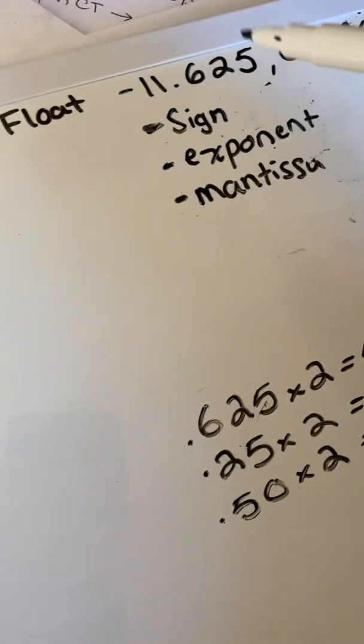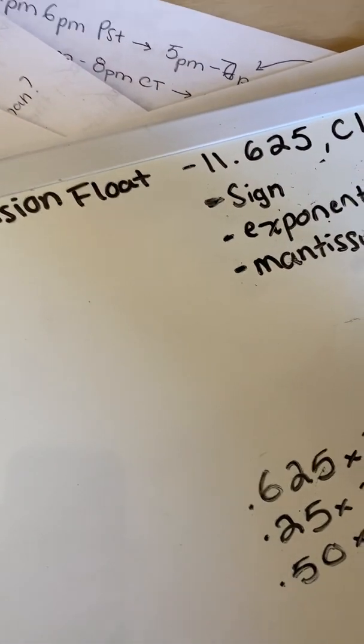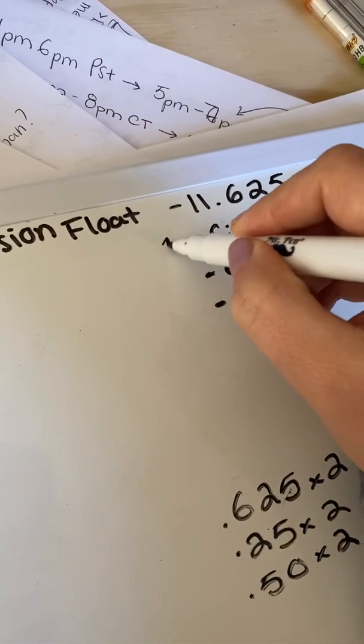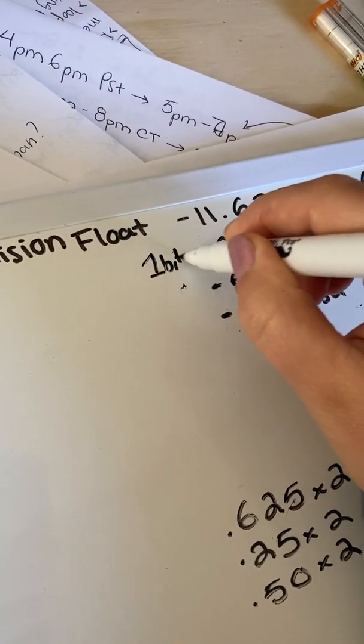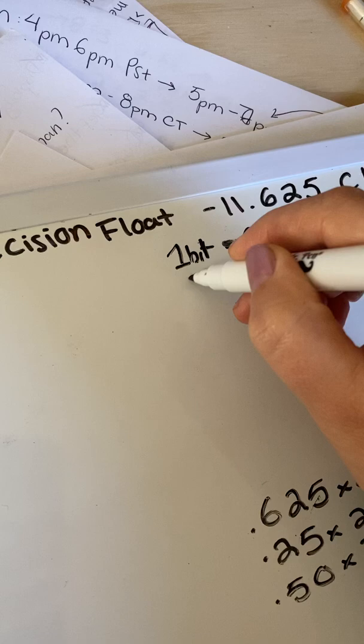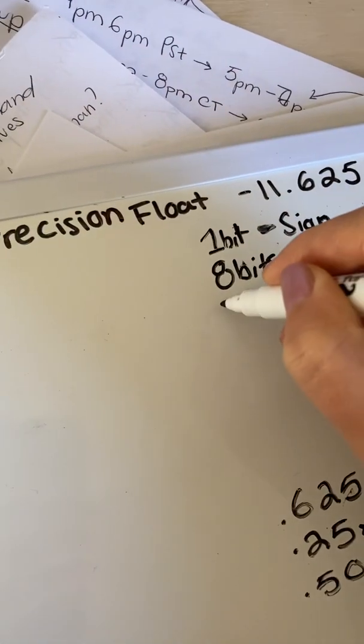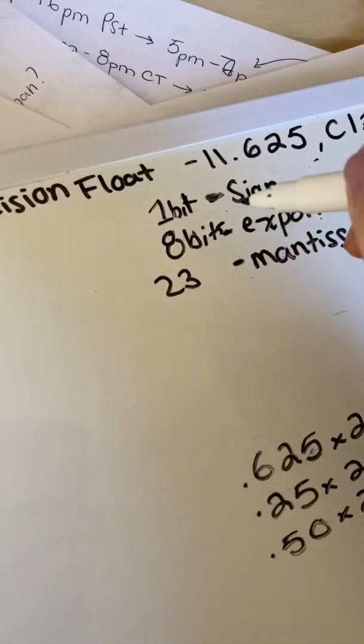So the first thing we're going to need to do is find our three primary components which are going to be the sign, the exponent, and the mantissa. One thing to note is that the sign is always going to be the size of one bit, and the exponent is always going to be 8 bits, and the mantissa is always going to be 23. This is because we want it to equal 32 bits.